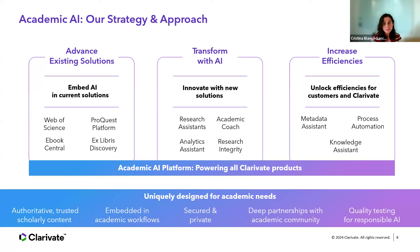To support these pillars and advance our academic portfolio across multiple use cases at scale, we've developed an academic AI platform. It's designed to help us bring existing and new use cases to market faster. The platform allows us to deliver more capabilities and solutions with a consistent user experience. We do that using assets unique to Clarivate, such as our authoritative content, our ability to embed tools in the user's workflow, our expertise in AI technologies, our close partnership with the academic and publishing communities, and our strong commitment to responsible AI.